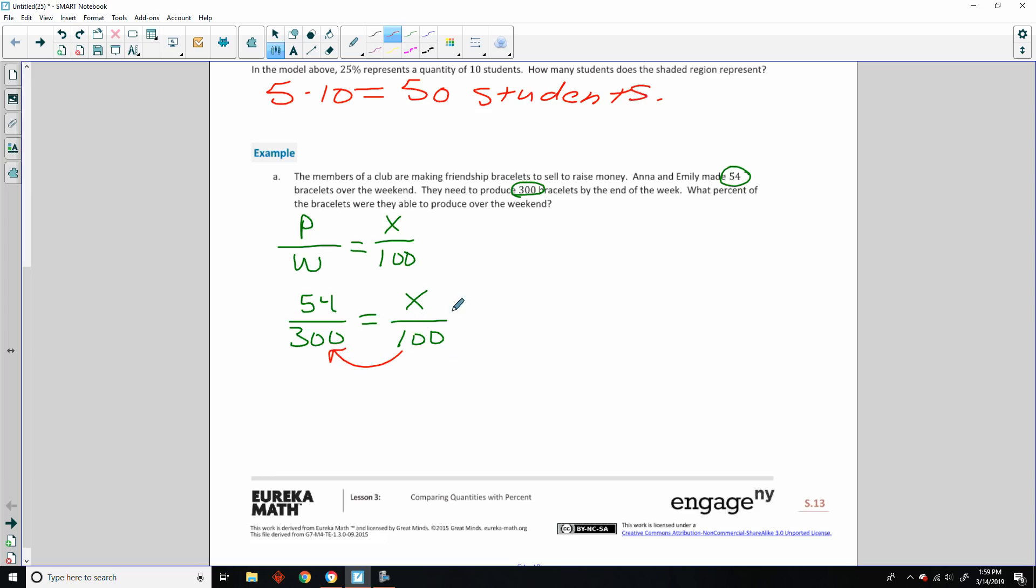So the portion that they've already done is 54. So they've already made 54 bracelets. The whole they need to produce is 300, and that is equal to some number out of 100, being percent. Percent means out of 100. So this is probably the easiest way to do this if you can see that there's something we can multiply or divide by. If I divide 300, what do I divide 300 by to get 100? Well, 300 divided by 3 is 100. So if I divide 54 by 3, then I get my answer. And 3 goes into 5 once with a remainder of 2, and 3 goes into 24 eight times. So 54 divided by 3 is 18. So they are 18% done, having made 54 bracelets.